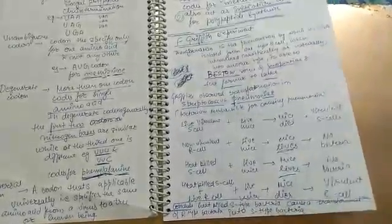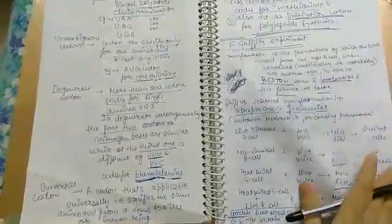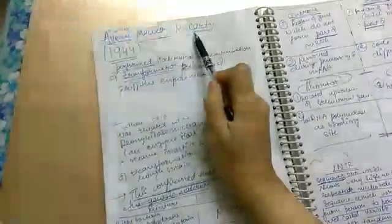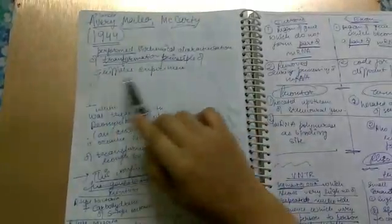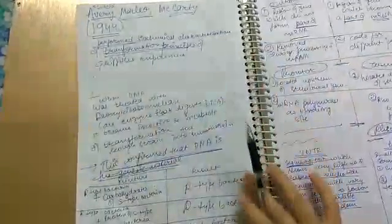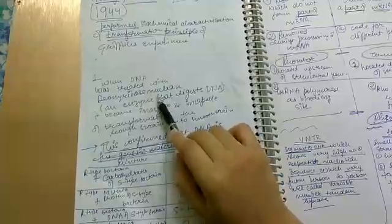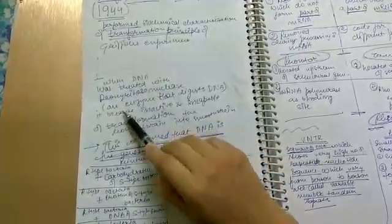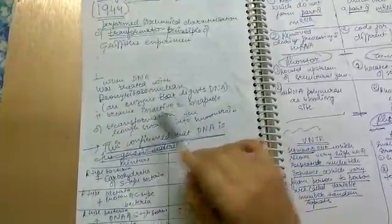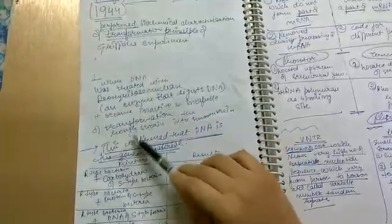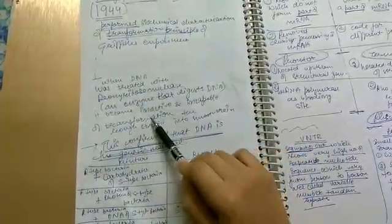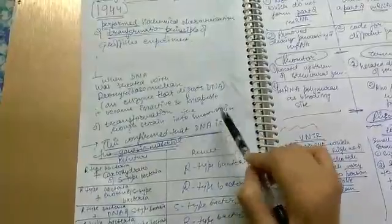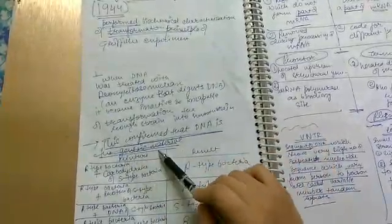Avery, MacLeod, and McCarty in 1944 performed biochemical characterization of the transformation principle of Griffith's experiment. When DNA was treated with deoxyribonuclease, an enzyme that digests DNA, it became inactive and incapable of transforming the rough strain into smooth strains. This confirmed that DNA is the genetic material.